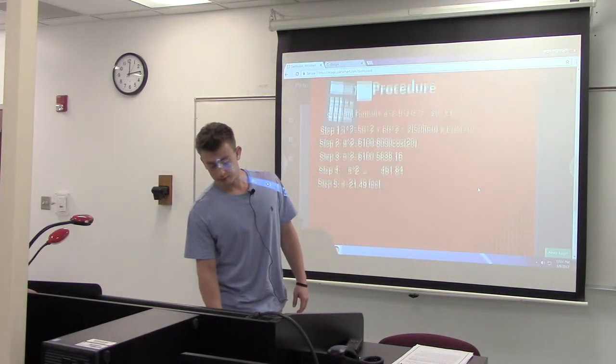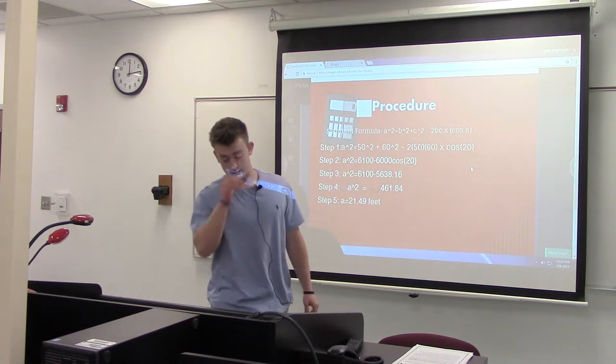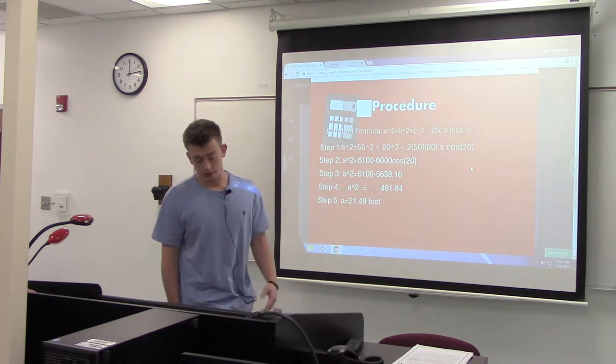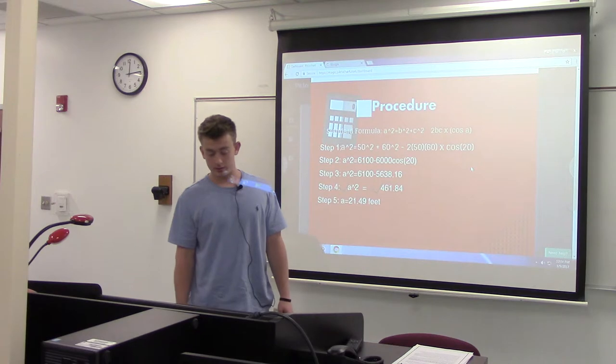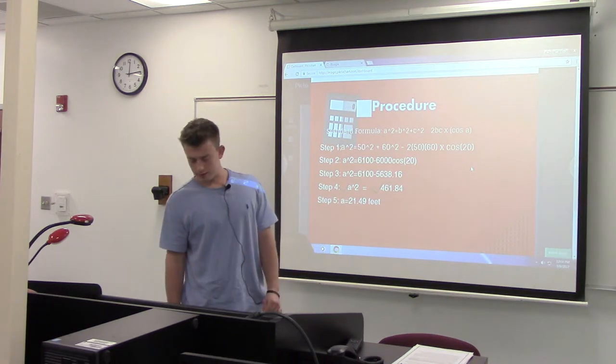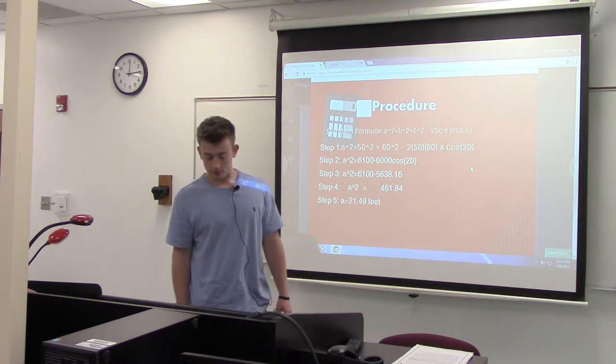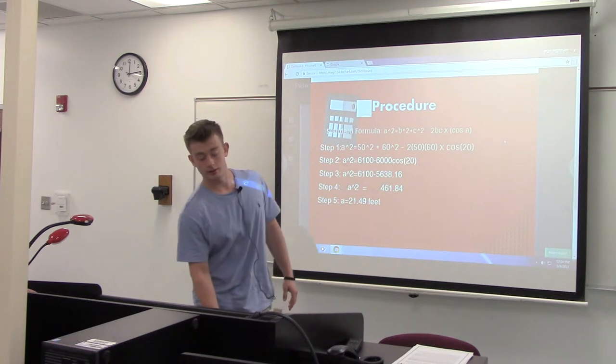Okay, to attack this problem, the first step you would use, the standard formula is a squared equals b squared plus c squared minus 2 times b times c times cosine of angle a.